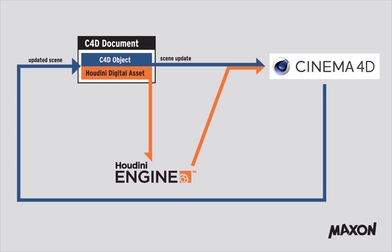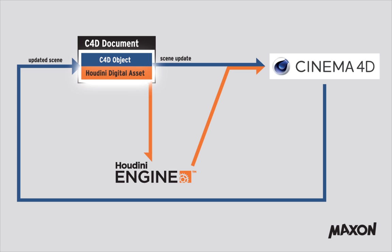To get a slightly better idea of the flow of data inside Cinema 4D with the Houdini Engine integration, I have created a simple graph to illustrate it. Let's imagine the simplest possible scene that has one Cinema 4D object and one Houdini digital asset.